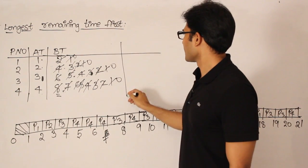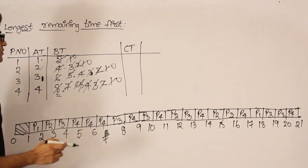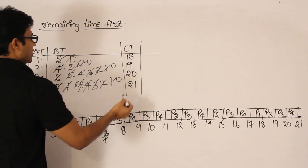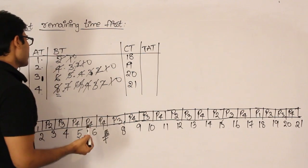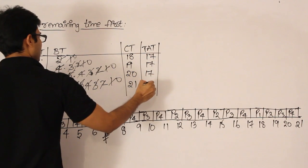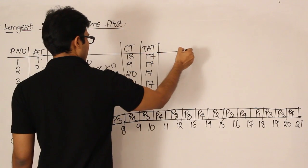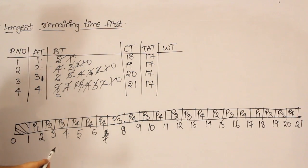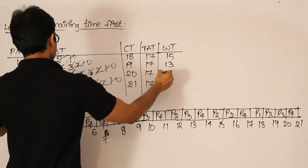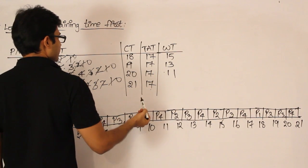Completion times: P1 completed at 18, P2 at 19, P3 at 20, P4 at 21. Turnaround time is completion time minus arrival time: P1 = 17, P2 = 17, P3 = 17, P4 = 17 — all processes get the same turnaround time. Waiting time is turnaround time minus burst time: P1 = 15, P2 = 13, P3 = 11, P4 = 9.